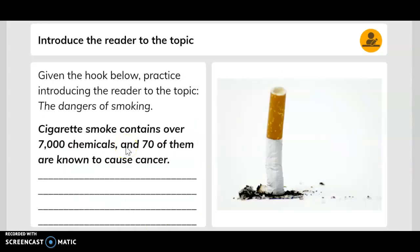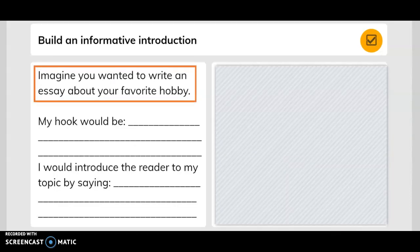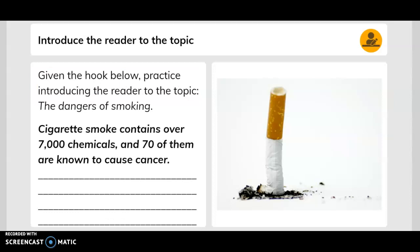Introduce the reader to the topic. Looking below, practice introducing the reader to the topic: the dangers of smoking. Cigarette smoke contains over 7,000 chemicals and 70 of them are known to cause cancer. So here you can practice what other information that you can also write about cigarette smoke here, because this first one was given to us as a hook to start us off with.